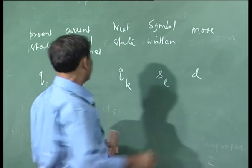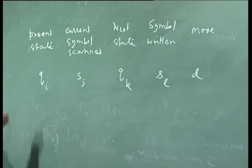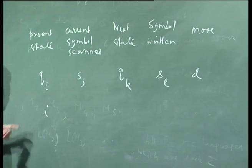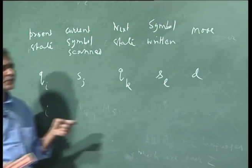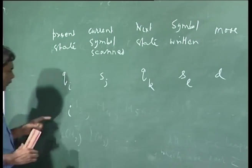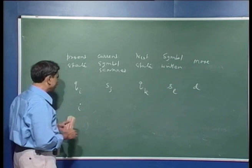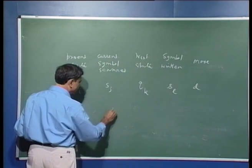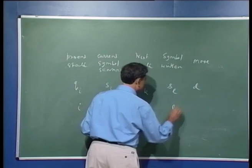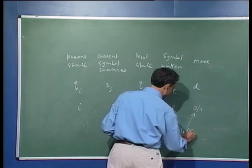Supposing the present state is q_i, the current symbol scanned is the j-th symbol, the next state is the k-th state, the symbol written is s_l, and the move is d — which can be left or right. Each one of these can be coded as a number. For example, I can represent the state q_i by the number i, the symbol S_j by the number j, the next state by k, the written symbol by l, and the move as 0 for left and 1 for right.